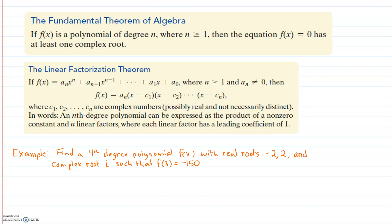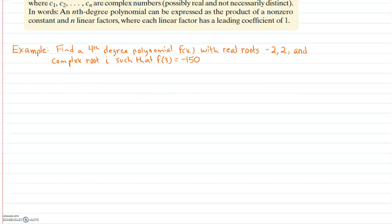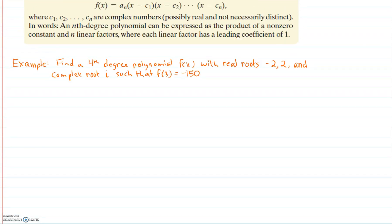The Linear Factorization Theorem helps us to separate out what the factors would look like in any particular polynomial. We're going to start with an example and this example says we're going to find a fourth-degree polynomial where the real roots are negative 2 and 2.